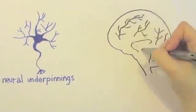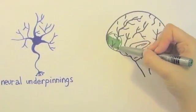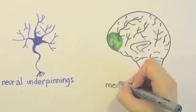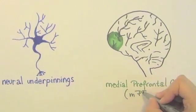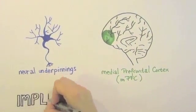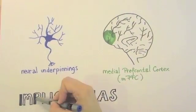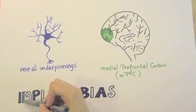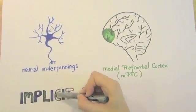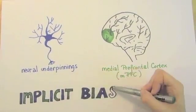One brain area that has been shown to play a critical role in social-cognitive processes and social stereotyping is the medial prefrontal cortex. It has been suggested that the medial prefrontal cortex may actually mediate the implicit bias that ingroup members present towards individuals of the outgroup.